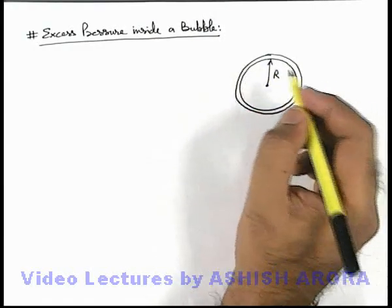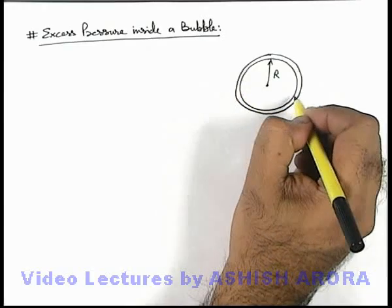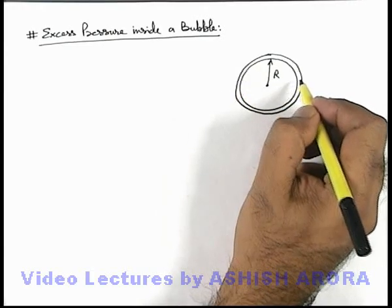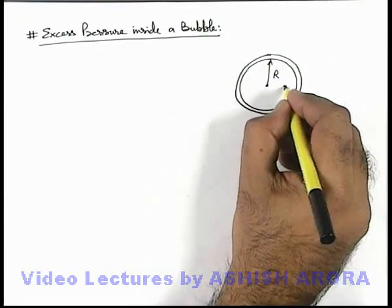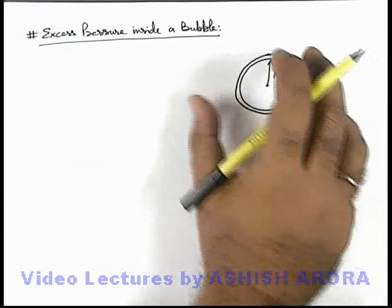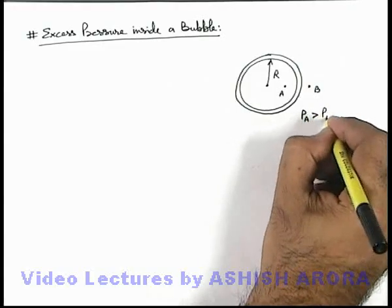In this situation, again due to surface tension, the liquid surface inside as well as outside on the soap bubble or the liquid bubble will have a tendency to contract. And due to which inside, say if there is a point A and outside there is a point B, obviously due to this contracting tendency, pressure at A will be more than pressure at B.